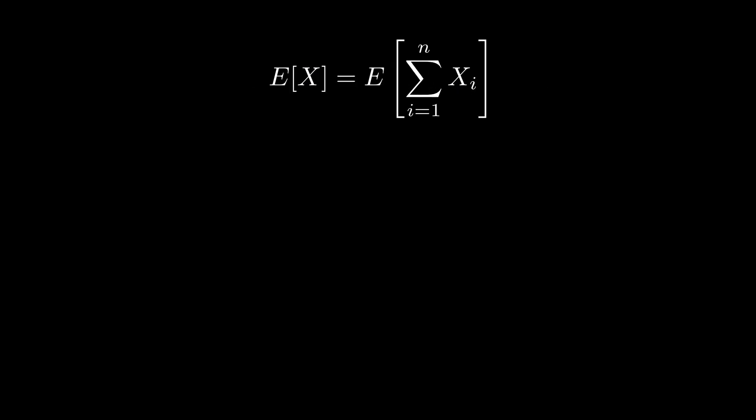Writing E of X as E of the sum of the X sub i helps us because expectation is linear. Remember, events don't even have to be independent for E of X plus Y to equal E of X plus E of Y.